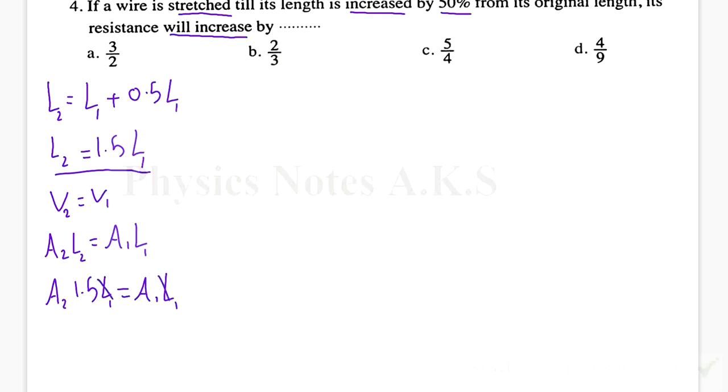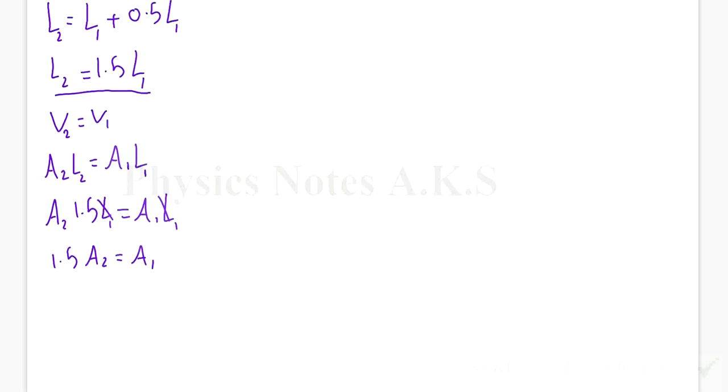I can substitute: this is going to be A2 multiplied by 1.5 L1 equals A1 L1. I can cancel L1 with L1, so I have 1.5 A2 equals A1. If I want to find A2, I just divide both sides by 1.5, so it's going to be 1 over 1.5 A1.